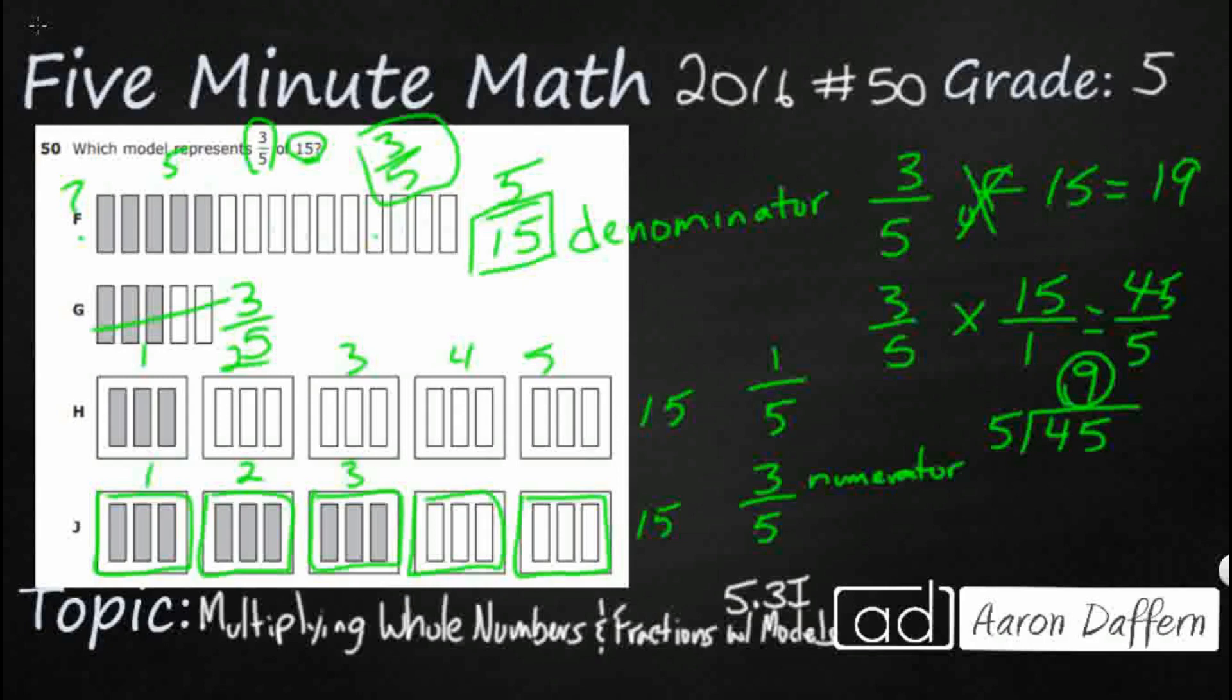And take a look at how many bars we have. 1, 2, 3, 4, 5, 6, 7, 8, 9. Our answer is J.